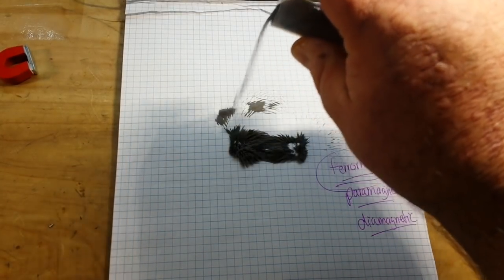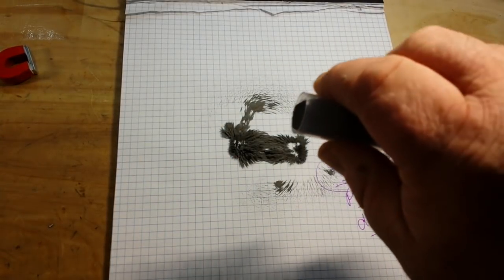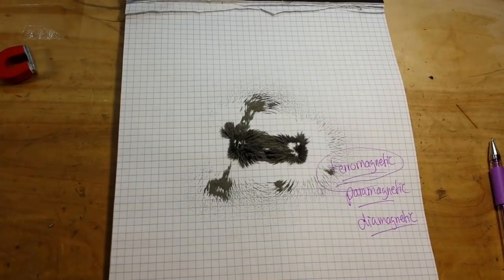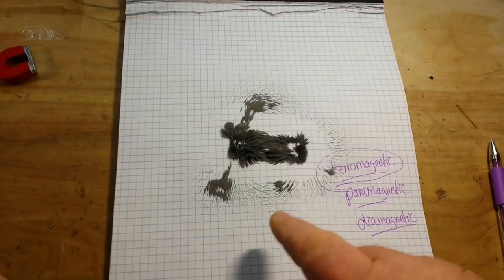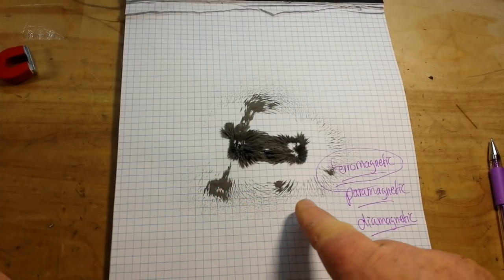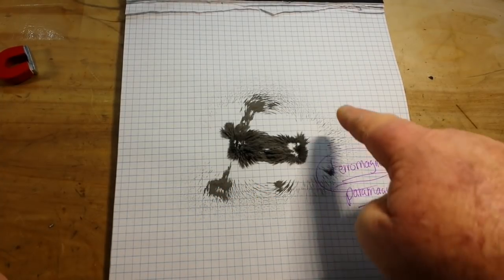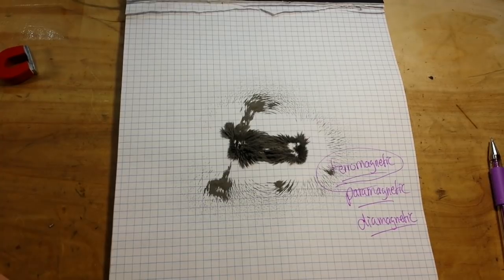But the ones I want you to look at are not the ones that are close to the magnet, but the ones that are out here. Here's our north pole, here's our south pole. You can actually see the lines of magnetic flux.